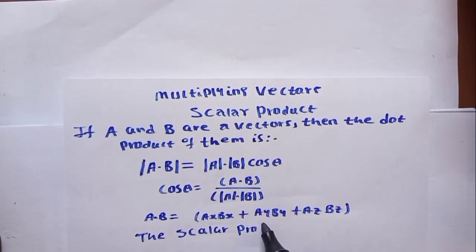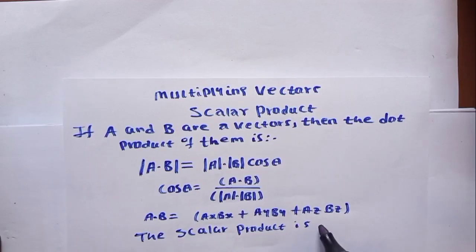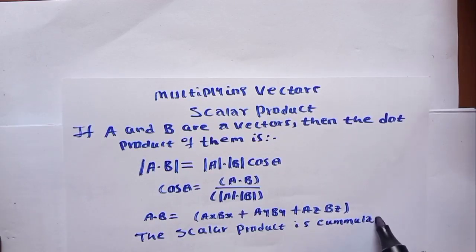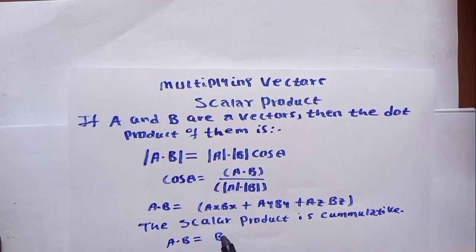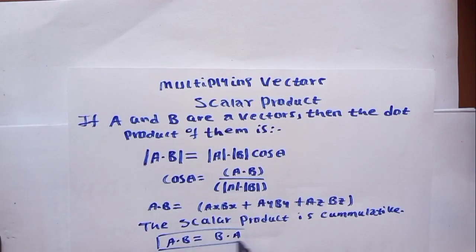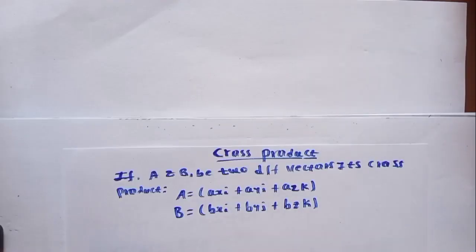The scalar product is commutative. This means a dot b equals b dot a — it does not change its behavior depending on position.